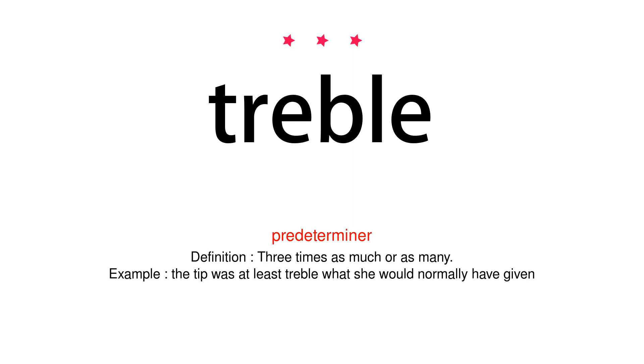Predeterminer. Definition: three times as much or as many. Example: the tip was at least treble what she would normally have given.